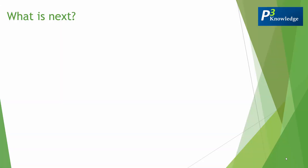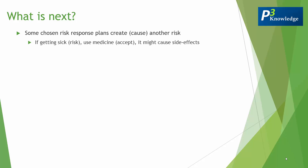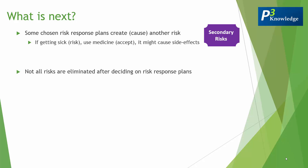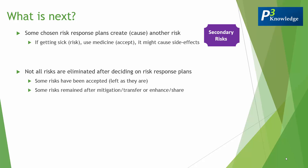After selecting your strategies and defining an action plan for each risk, what comes next? First, bear in mind that some chosen risk response plans can create or cause another risk — for example, using medicine to deal with getting sick might cause side effects. Those are called secondary risks. Also, not all risks are eliminated after deciding on response plans, because some risks have been accepted and some remain after mitigation or transfer. Those remaining risks are called residual risks.